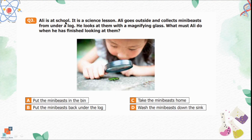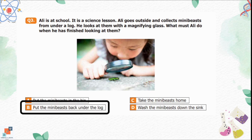Question number 3: Ali is at school during a science lesson. He goes outside and collects mini beasts from under a log, then looks at them with a magnifying glass. What must Ali do when he has finished looking at them? Option A is put the mini beasts in the bin. Option B is put them back under the log. Option C is take them home. Option D is wash them down the sink. Options A, C, and D are incorrect. Only option B is correct — he should put the mini beasts back under the log, returning them to their habitat.